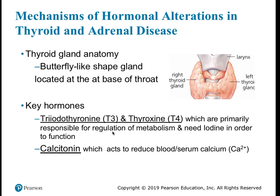The other thyroid hormone, calcitonin, is unrelated to metabolism — it regulates blood calcium levels. If a lot of calcium is absorbed from food, blood calcium rises, triggering the thyroid to secrete calcitonin, which helps store excess calcium in the bones. This chapter will focus primarily on T3 and T4 effects on metabolism.